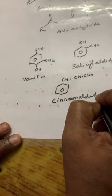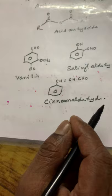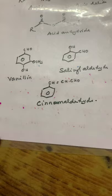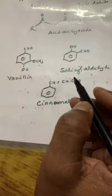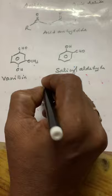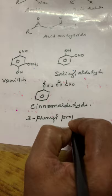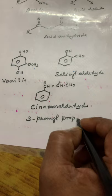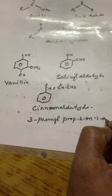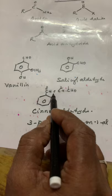What is the IUPAC name of cinnamaldehyde? Where you have to start numbering — here two functional groups are there: one is aldehyde, another one is a double bond (alkene). Aldehyde should be given first preference. Numbering: 1, 2, 3. Then 3-phenyl. Root word is propane, but second position has a double bond. So the IUPAC name is 3-phenylprop-2-en-1-al. This is an unsaturated aldehyde because a double bond is present.